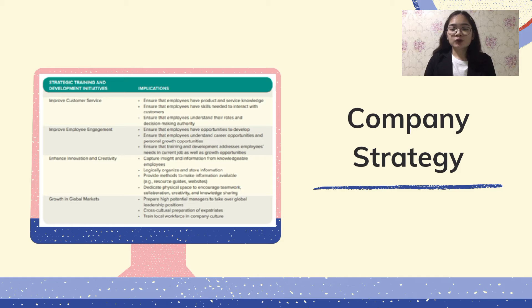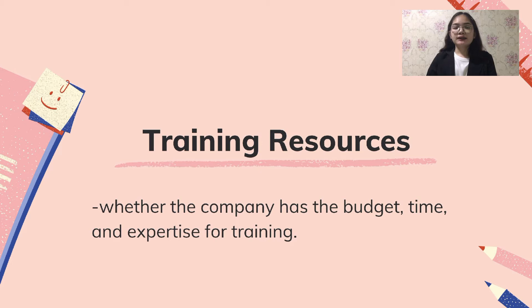The greater the strategic role of training, the more likely the company will organize the training functions using business-embedded or corporate university models, both of which emphasize that training is used to help solve business problems. The third factor is training resources — it is necessary to identify whether the company has the budget, time, and expertise for training. The company must answer whether it has the resources to build or develop training programs itself, or whether it should buy them from a vendor or consulting firm. This is known as the buy versus build decision.